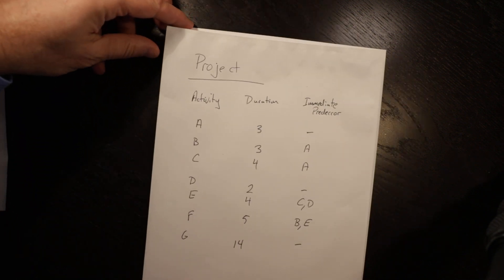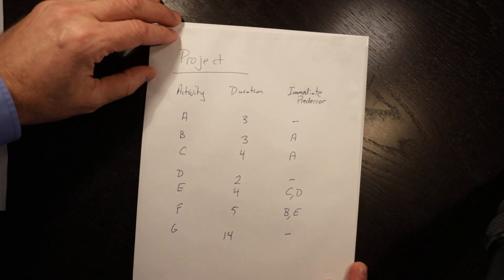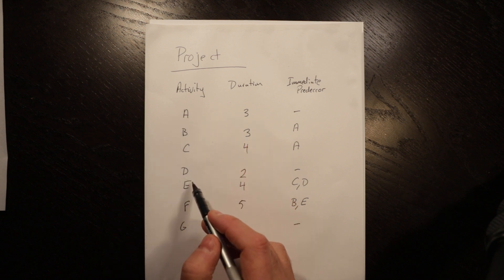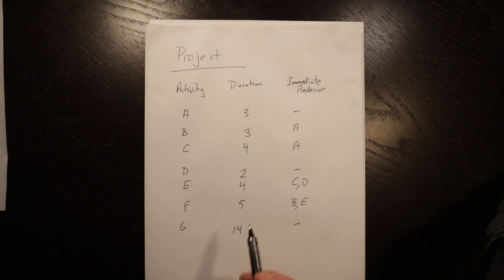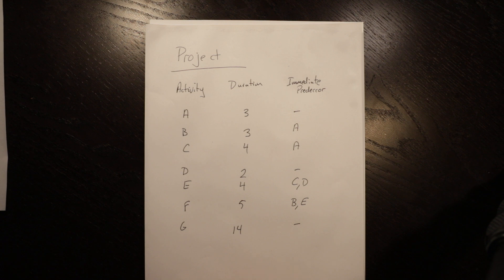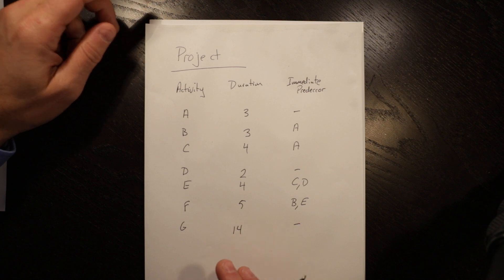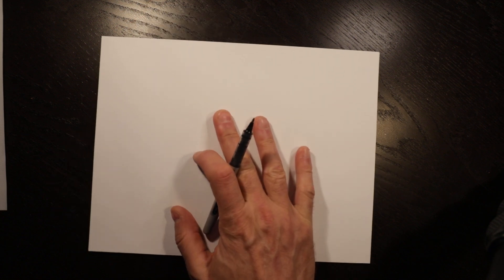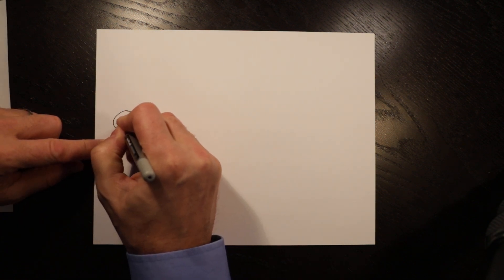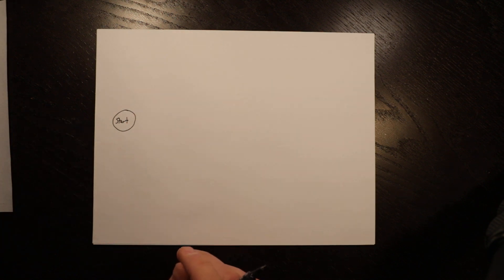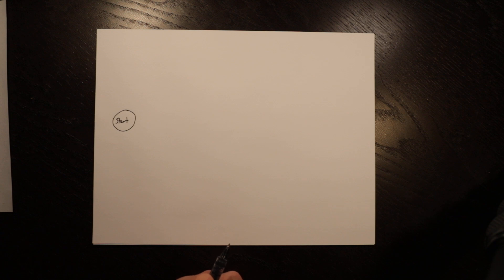Here we go — this is a relatively simple project. You can see we have seven activities. We are given the duration; if you're doing the project plan yourself, you would have to estimate those durations. We're also given the predecessors, which will help us with the relationships between individual activities. I always like to start with a start node — it helps me keep clear in my mind where the activities are and how they relate to each other.